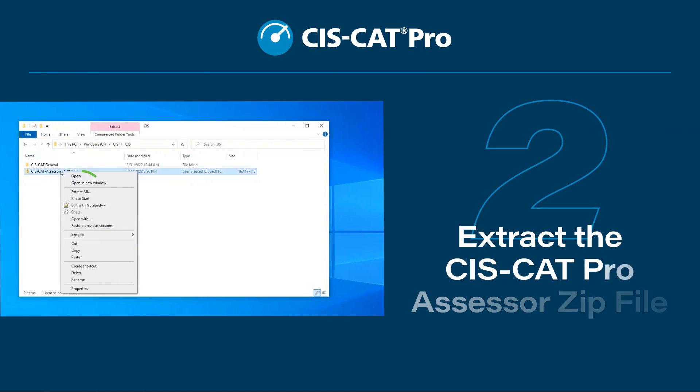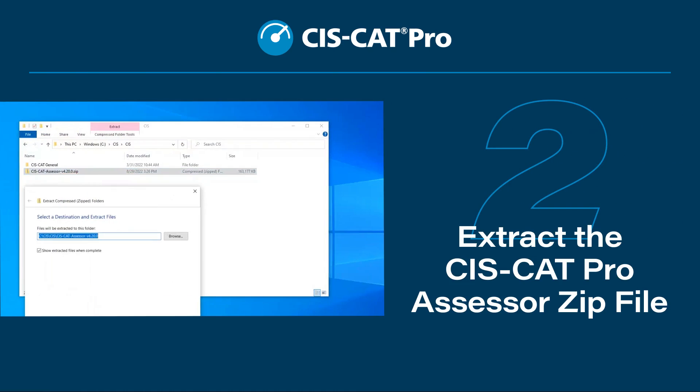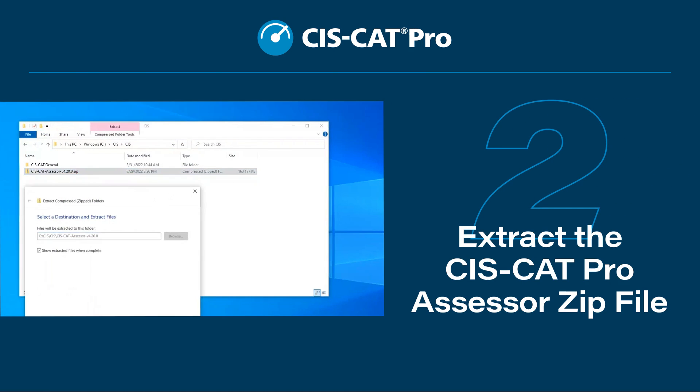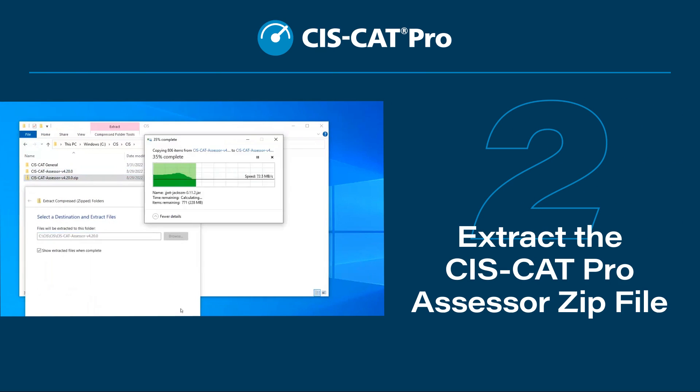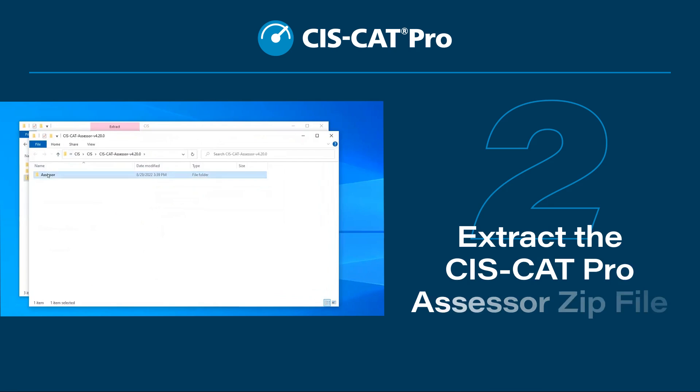Step 2: Extract the SysCat Pro Assessor zip file. You'll need to do this on a Windows machine where you have admin privileges to execute an assessment.